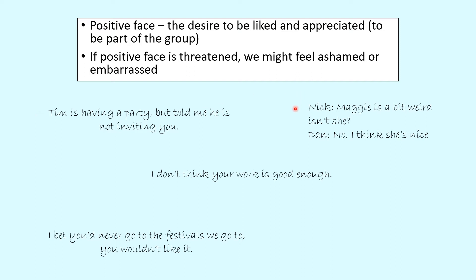The second example has two speakers: Nick saying 'Maggie's a bit weird, isn't she?' and Dan saying 'No, I think she's nice.' This response is most likely going to make Nick feel embarrassed or ashamed of what he has said, as Dan refuses to agree with his comment. Our next example, 'I don't think your work is good enough,' is a potential face-threatening act as it goes against that feeling of wanting to be appreciated, whether it's work that took a lot of time or something the listener hasn't spent time on.